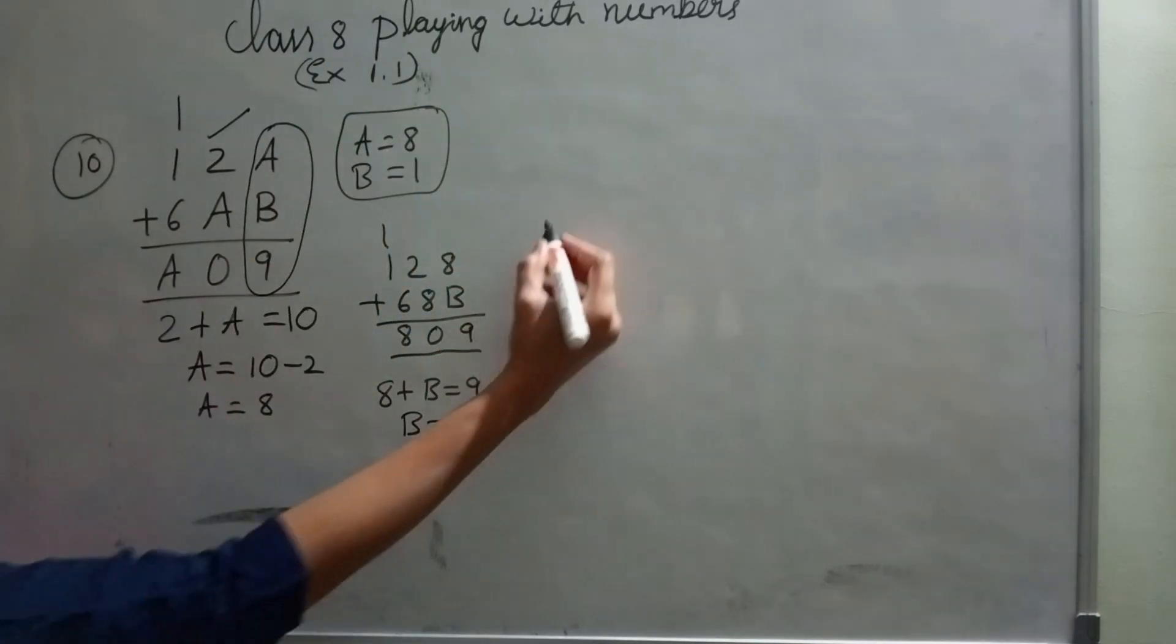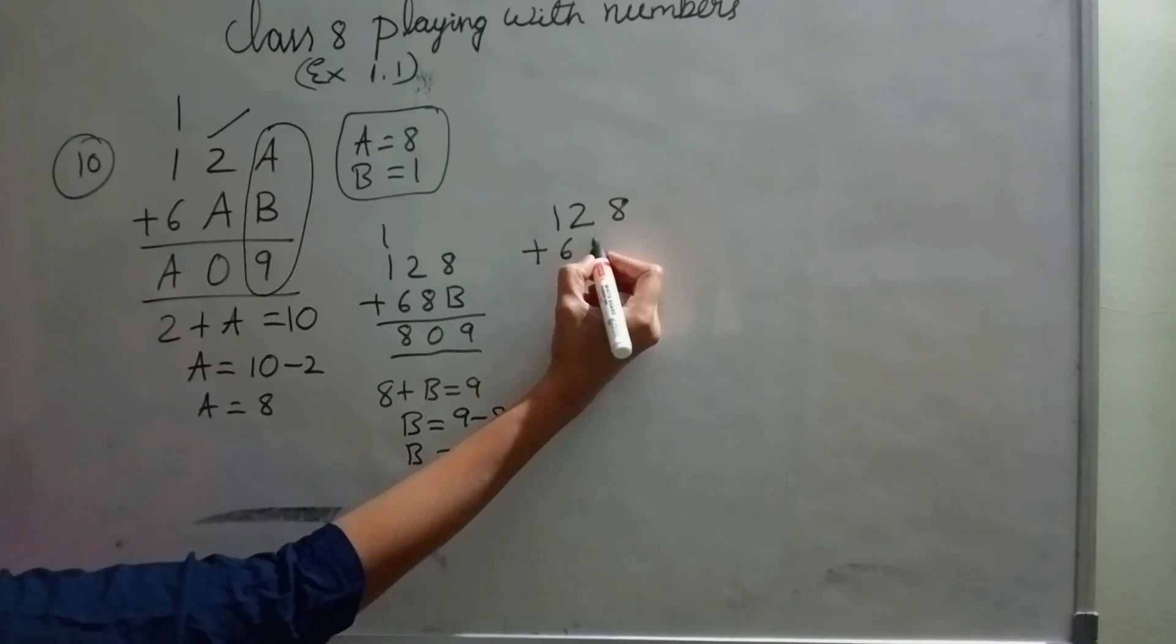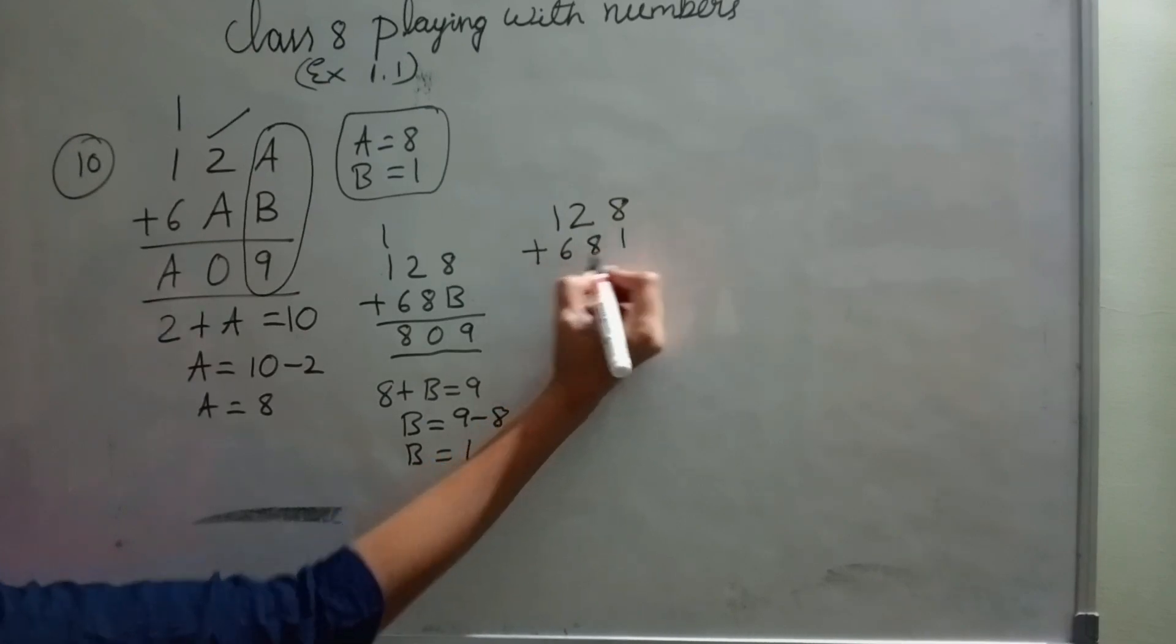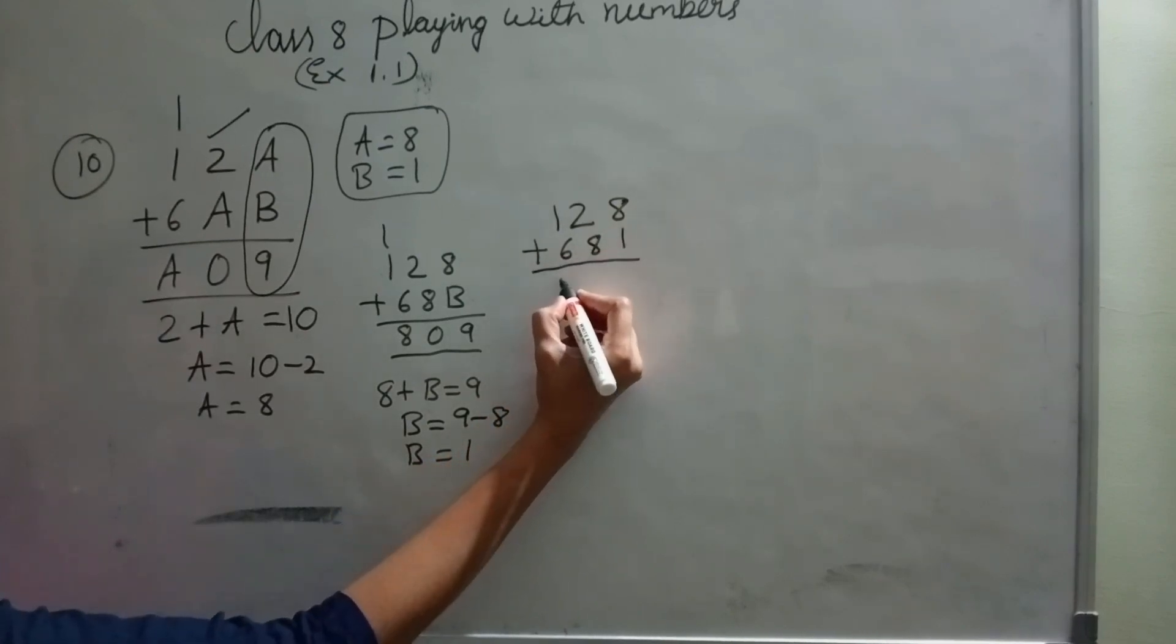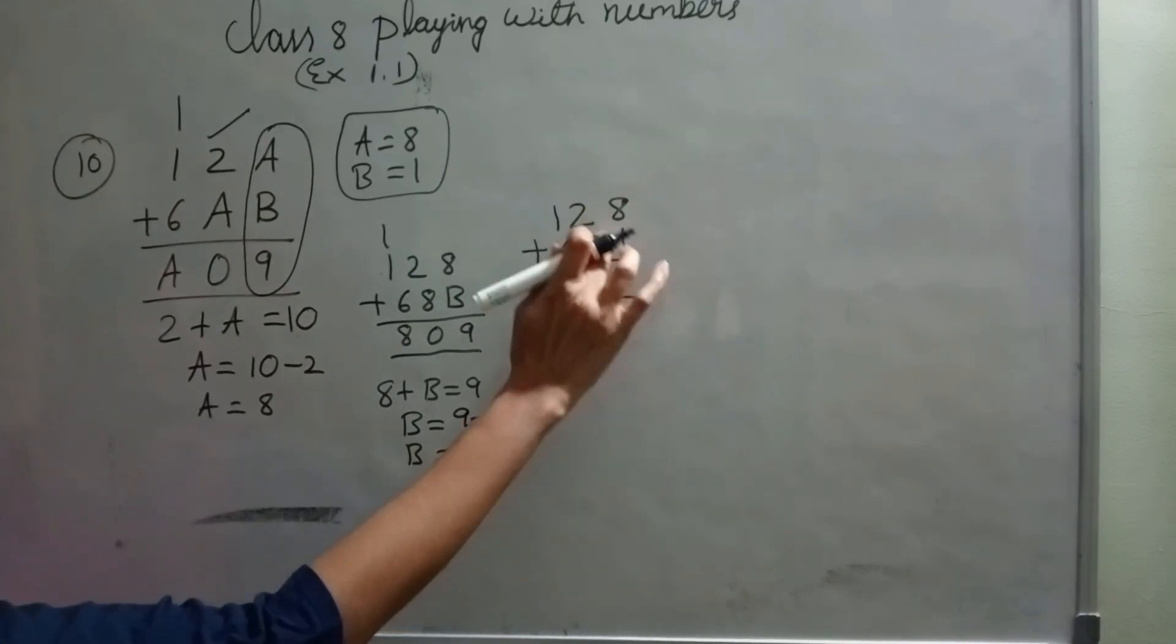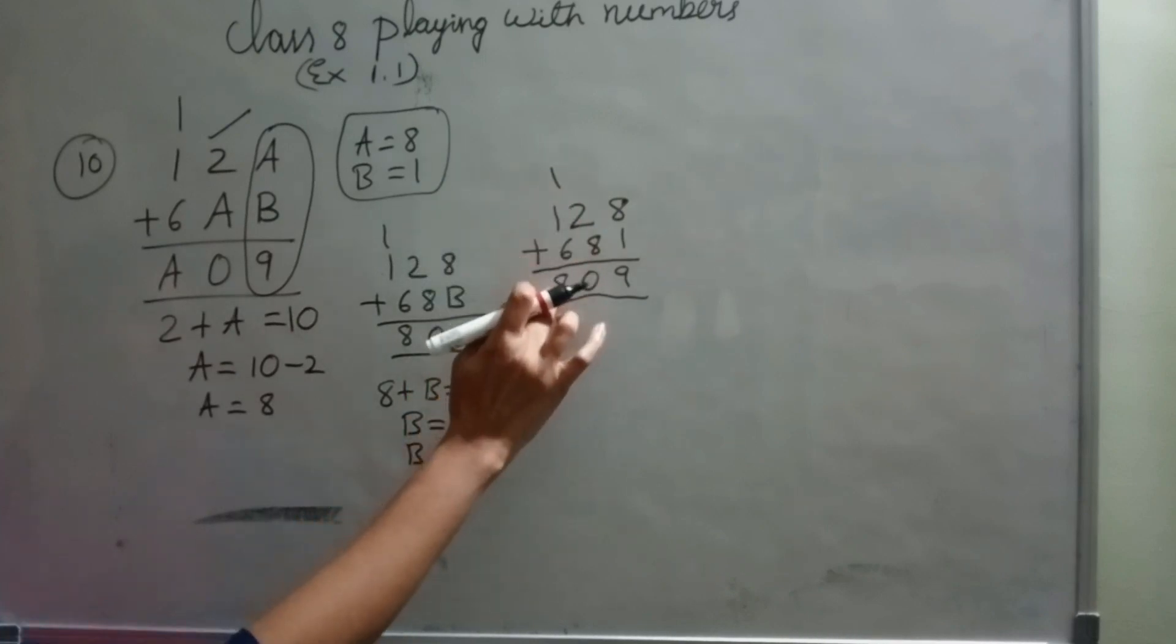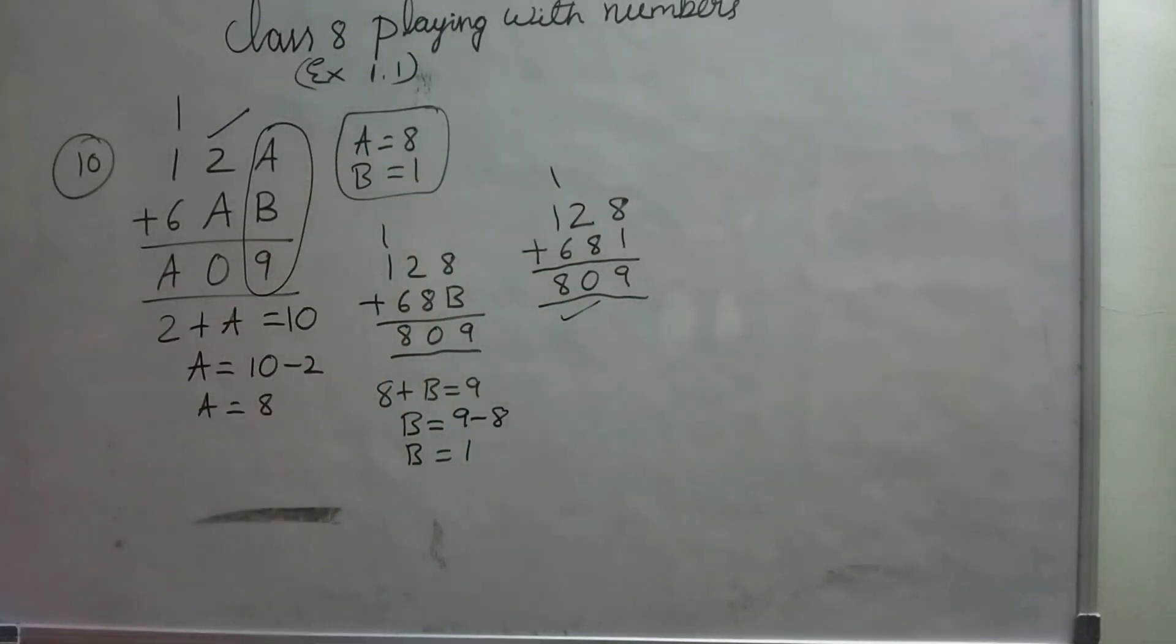Once again we'll solve. 128 plus 681 equals 809. 8 plus 1, 9. 8 plus 2, 10. 1 carry. 1 plus 1, 2. 2 plus 6, 8. So A equals 8 and B equals 1 is the correct answer.